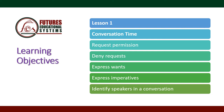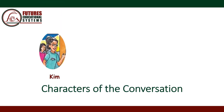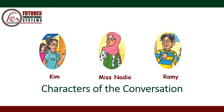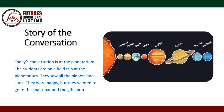Let's start our conversation. The characters are: a girl named Kim, Miss Nadia, and a boy called Romy. Today's conversation is at the planetarium — the students are on a field trip. They saw all the planets and stars and were happy, but they wanted to go to the snack bar and the gift shop.